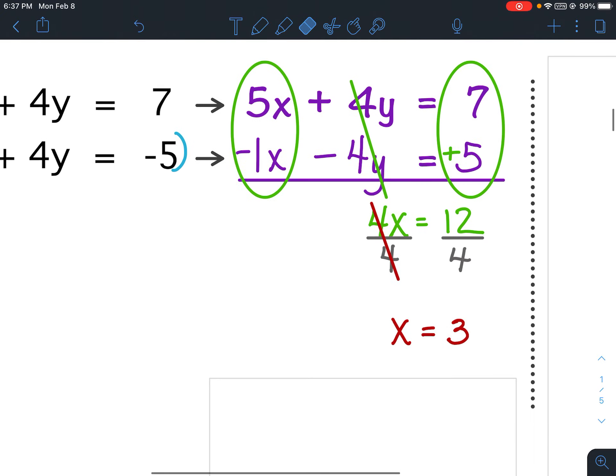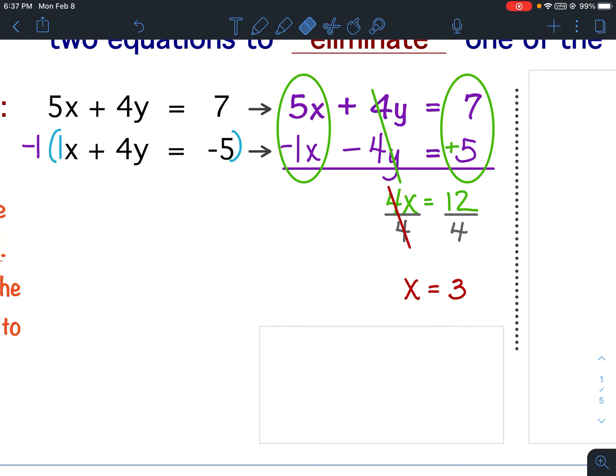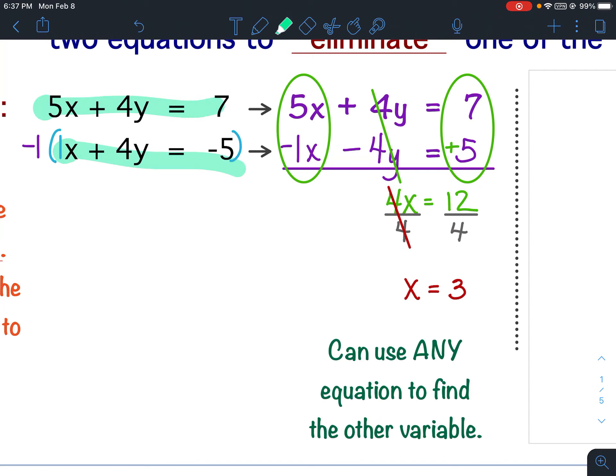If you remember from the substitution lesson, once we solved and got what a certain variable would equal, there was a specific equation that we always plugged it back into. Well, the best part about elimination is it doesn't matter which equation. You can choose any equation to find the other variable. In other words, I could use this original top one, I could use the original bottom equation, or I could even use the equation that I multiplied, the one that I manipulated. It doesn't matter. So it's your choice when you go to find the other variable. Now because this is the notes, I do want to keep us all on the same page. So I chose the top original equation.